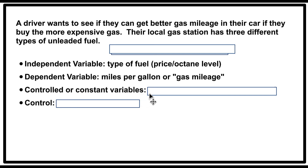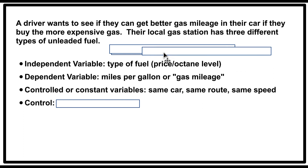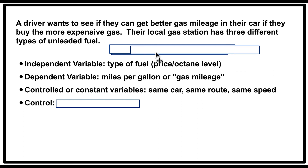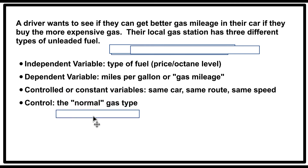The controlled or constant variables would include using the same car, the same route, the same speed. The type of surface you're driving on can affect gas mileage, as can going uphill or downhill, or going really fast or really slow — all of those things need to stay the same from one type of gas to the next. The control in this experiment would be the regular, normal gas type, since this person wants to see if buying more expensive gas lets them go farther on a gallon.